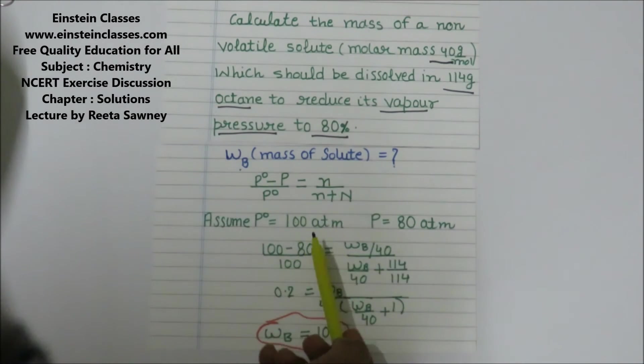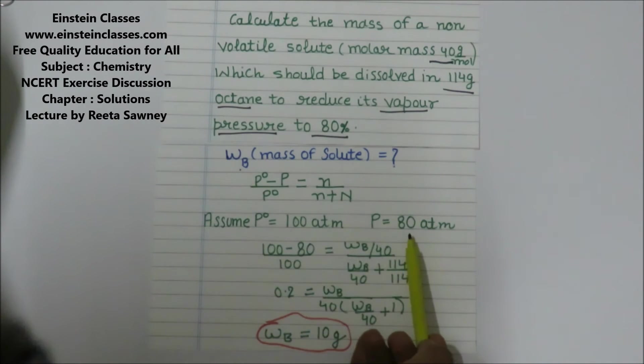If the vapor pressure is reduced to 80%, if initially we assume 100 atm, now it is reduced to 80 atm. So by placing the values: (100-80)/100 equals the mole fraction of solute.